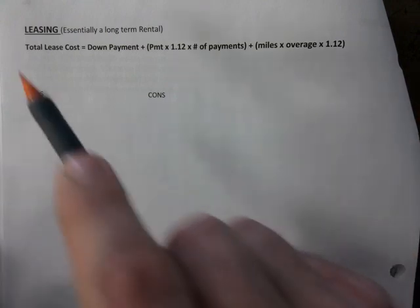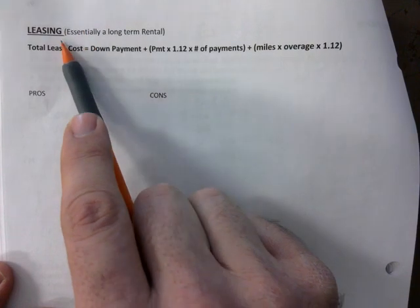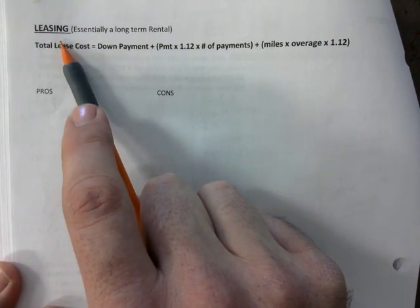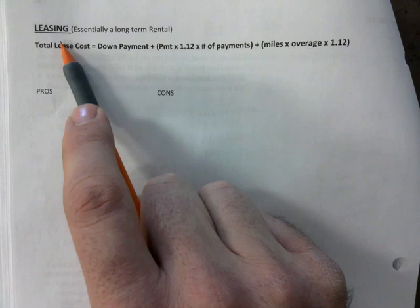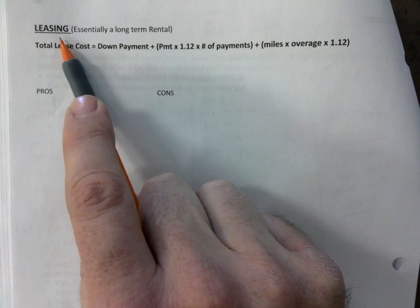So leasing is essentially a long-term rental. When you lease a car, you sign a contract. It's like a cell phone contract, right? Nowadays they have these contracts where you bring your phone back. That's the new thing - just give it back, so we'll charge you a little bit less. Leasing is like that.